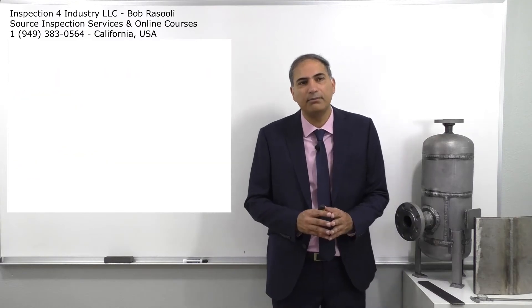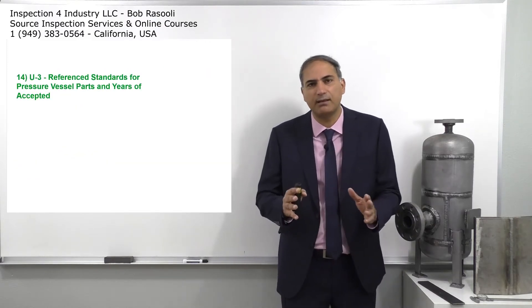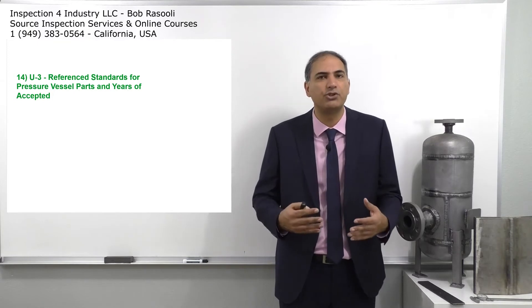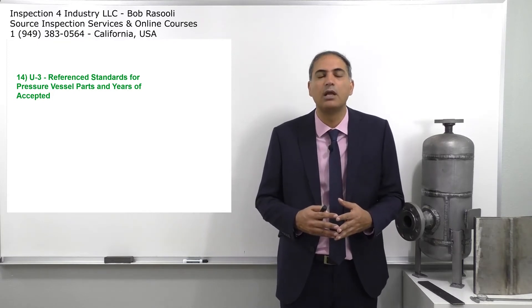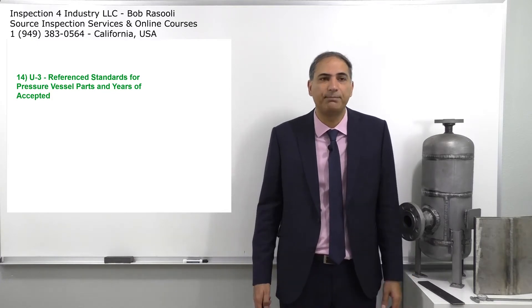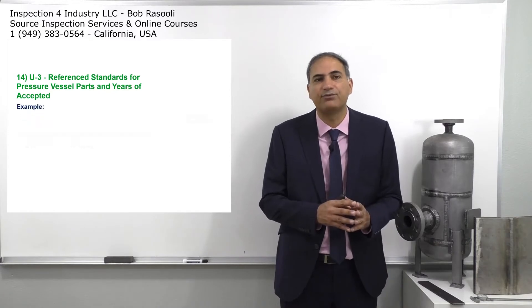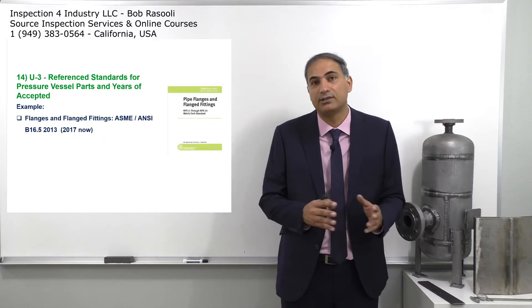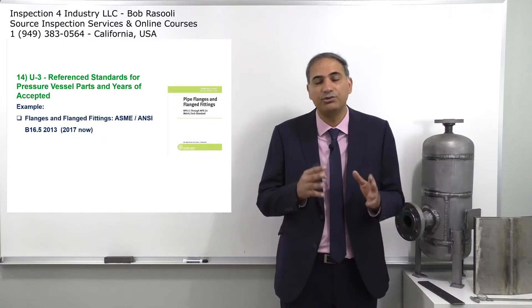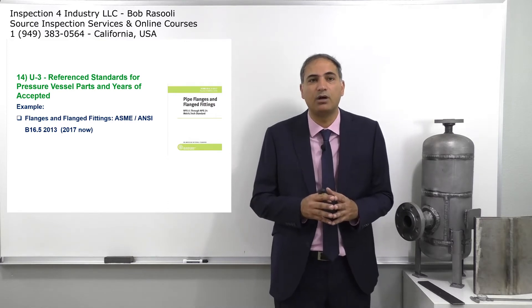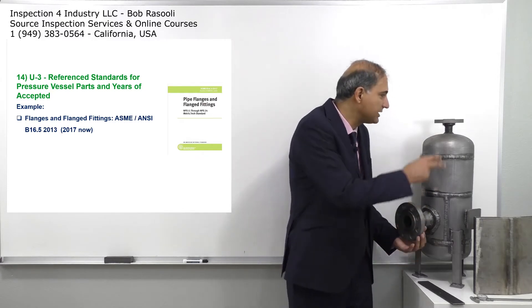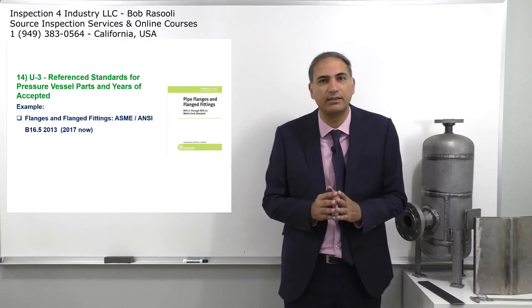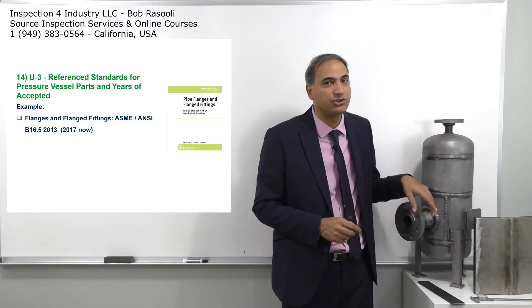The next item is not part of the exam — just for more information to get you familiar with the ASME reference standards for pressure vessel parts. Years of acceptance examples include flanged and flanged fittings. Normally, pressure vessels based on ASME Section 8 Division 1 should reference ASME B 16.5. Flanges come with a rating, such as 300-pound, 150-pound, or 600-pound flanges.